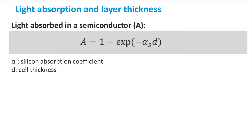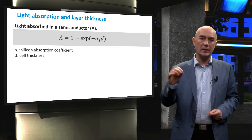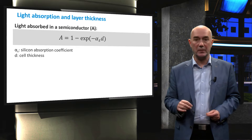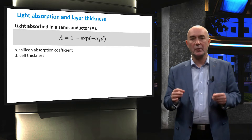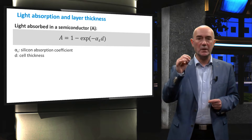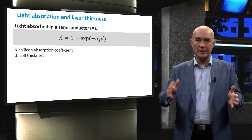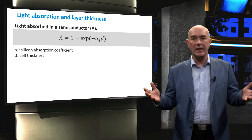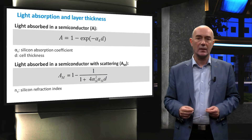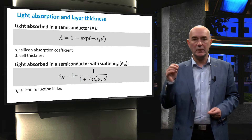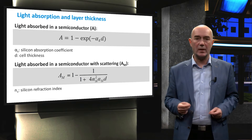How does light absorption relate to layer thickness? The fraction of light absorbed in a slab of semiconductor can be calculated using the Beer-Lambert law. This law states that the light intensity decays with the exponential function of the product of the absorption coefficient and the traveling path of photons. From this equation, we can calculate that to absorb 90% of light at a wavelength corresponding to the bandgap of crystalline silicon, we would need more than 2 meters — and I repeat, 2 meters — thick silicon wafer. This will never make a working solar cell. Fortunately, we have tricks to enhance absorption, which we call light-trapping techniques.